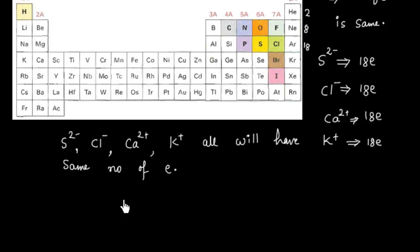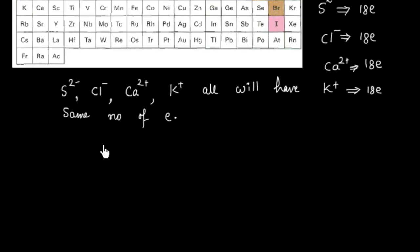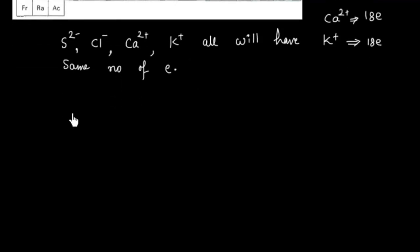Now the rule: if you have the same number of electrons and a positive charge, the nucleus attracts electrons more, so the size is smaller. If you have a more negative charge, there are fewer protons, so electrons in the outermost shell are less attracted and the size is bigger. In isoelectronic species, anions are bigger and cations are smaller.